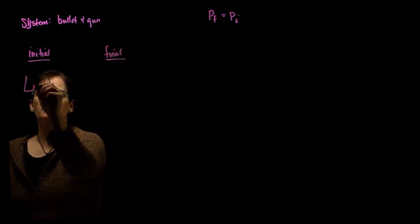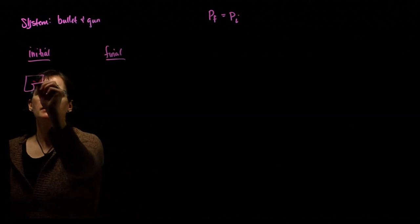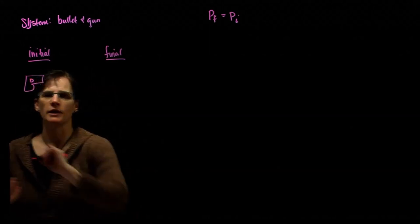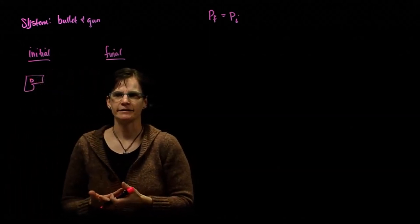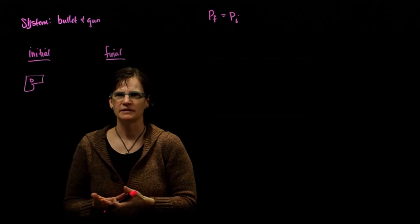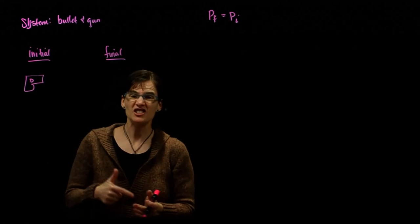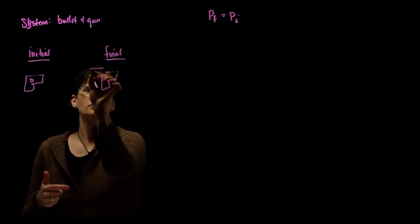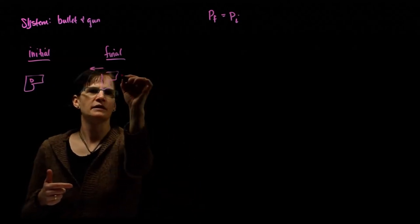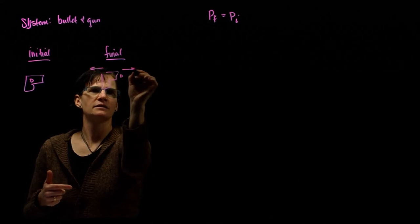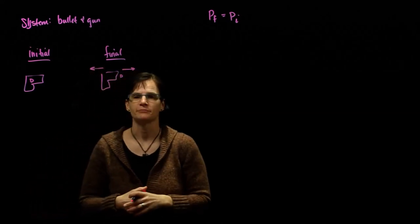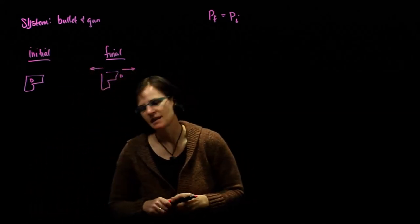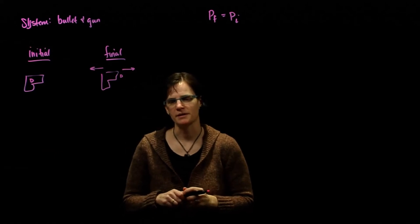Before the interaction, we have the gun and the bullet just sitting there. After the interaction, we're told that the gun moves off and the bullet moves off. We're going to assume it's purely horizontal in this case.